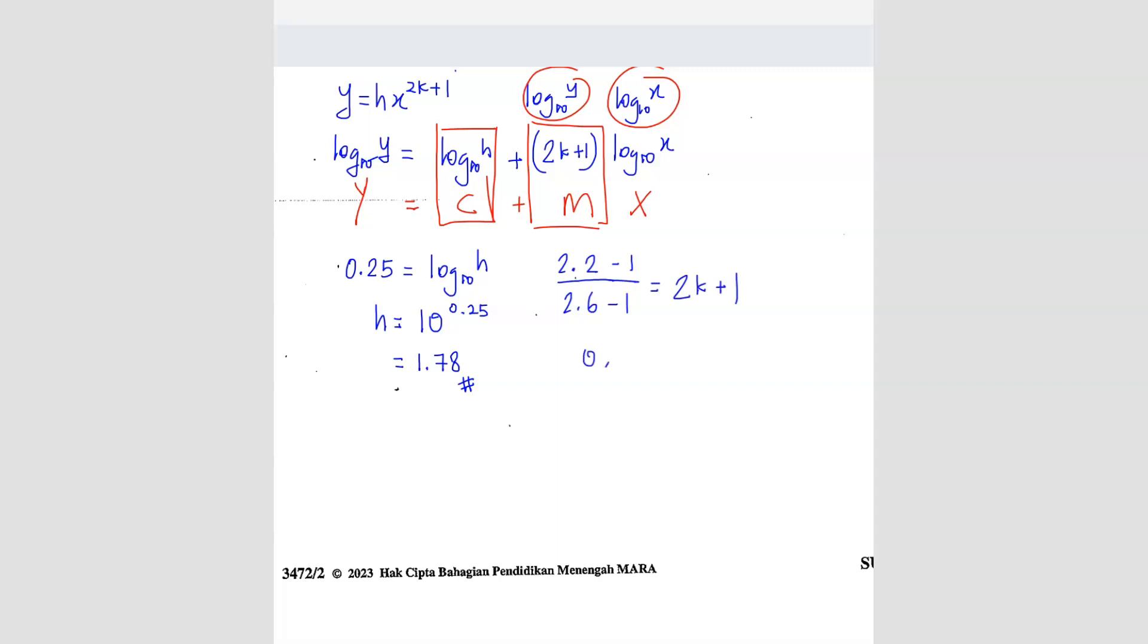So here you should get 0.75 equals to 2k plus 1. So from here we can find k, k is equals to negative 0.125. This is the answer that I got. You might get a bit different. It doesn't matter as long as it's closed. There's a range for the answers. So that's how you solve this.